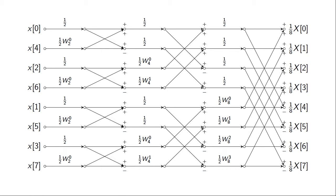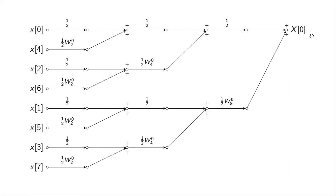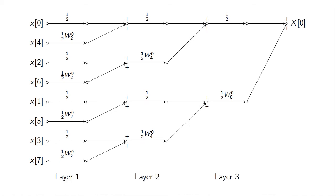To study the amount of fixed-point quantization noise in the output, we need to choose one output value of the FFT algorithm. Due to symmetry, all outputs will have the same amount of fixed-point quantization noise, so we can arbitrarily pick X0 and study the signal path leading to it. We see all the different branches of the FFT algorithm contributing to X0. It is also convenient to label the different layers of the FFT algorithm as layer 1 up to layer P in the general case, noting that more multiplications happen in earlier layers than in later ones.